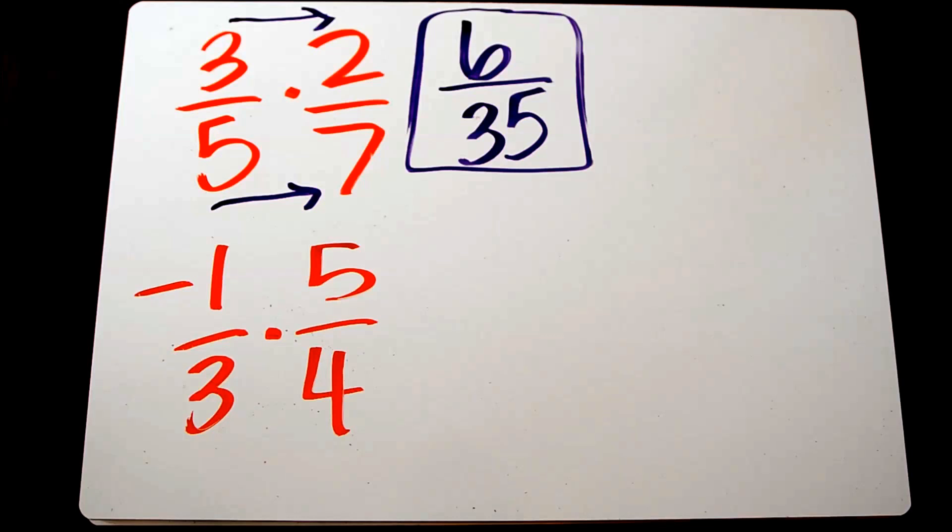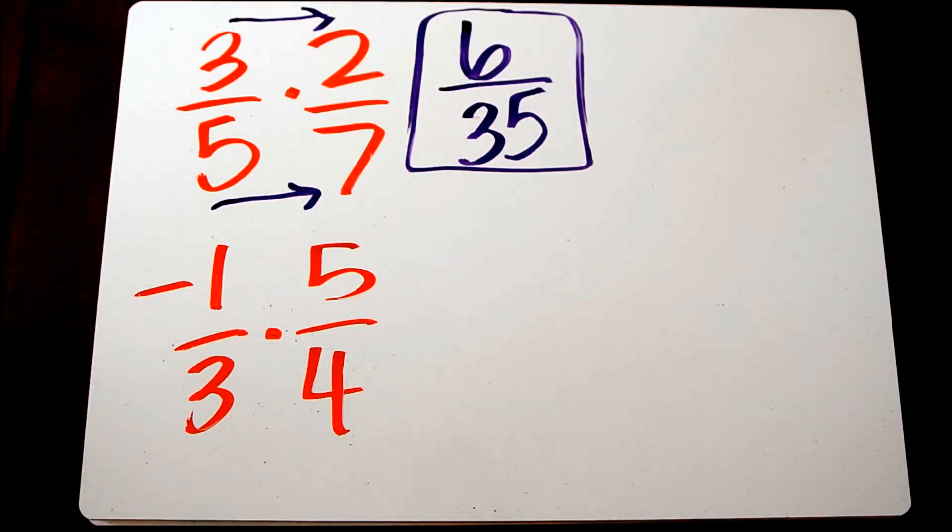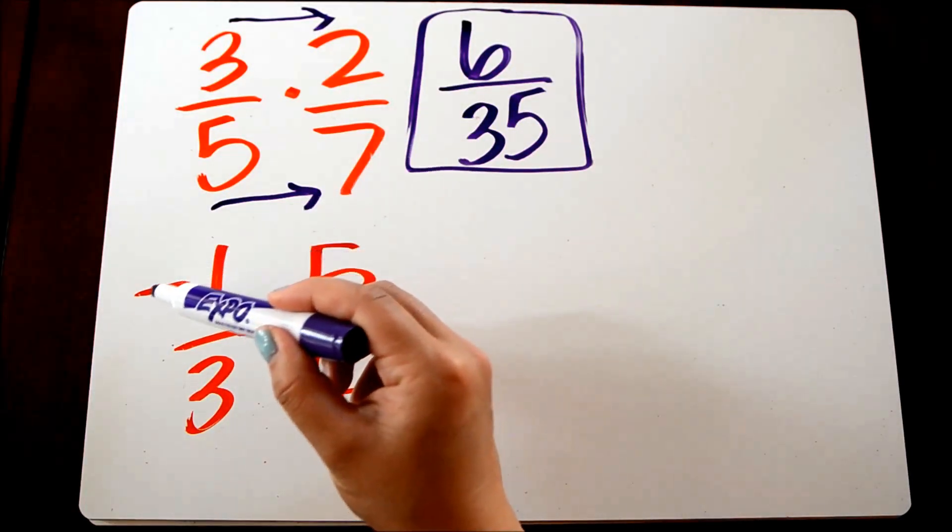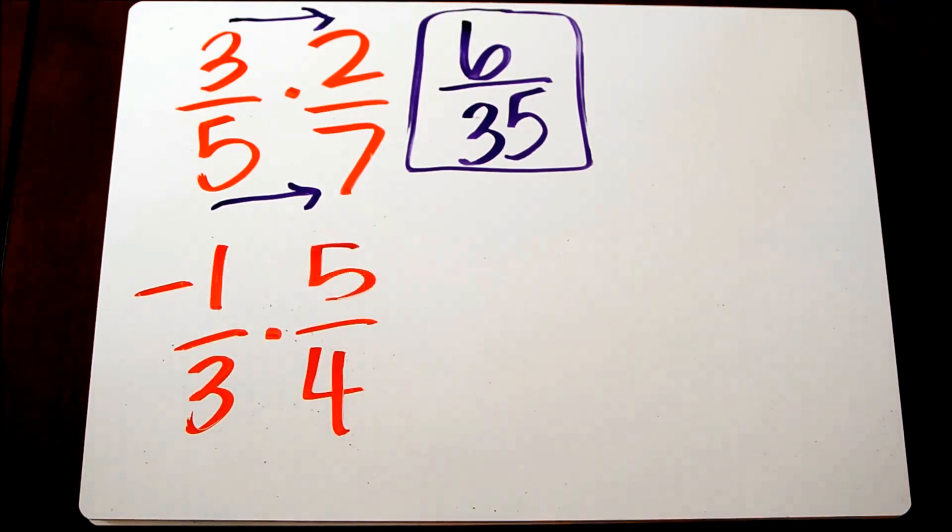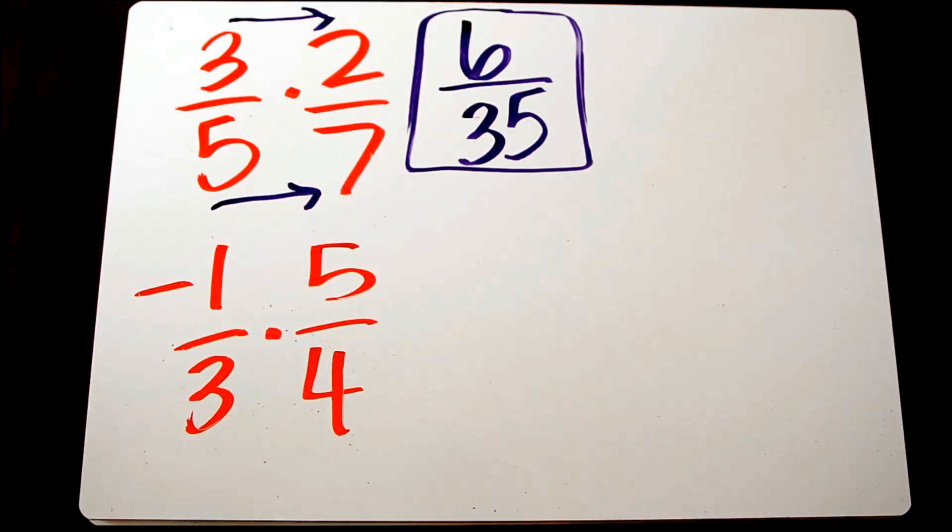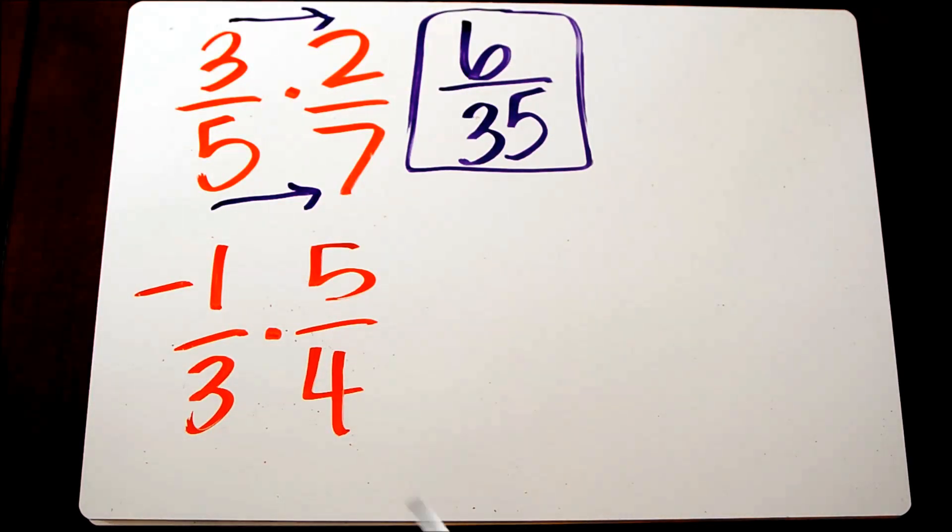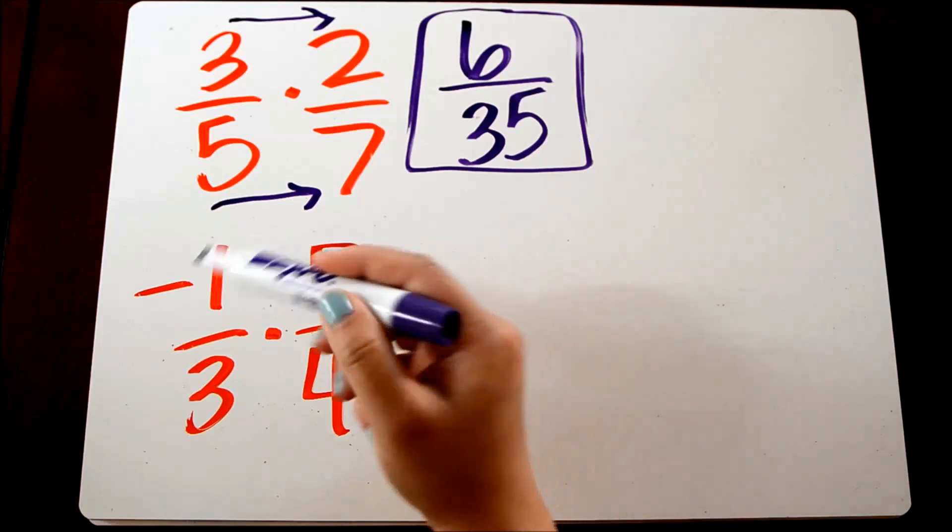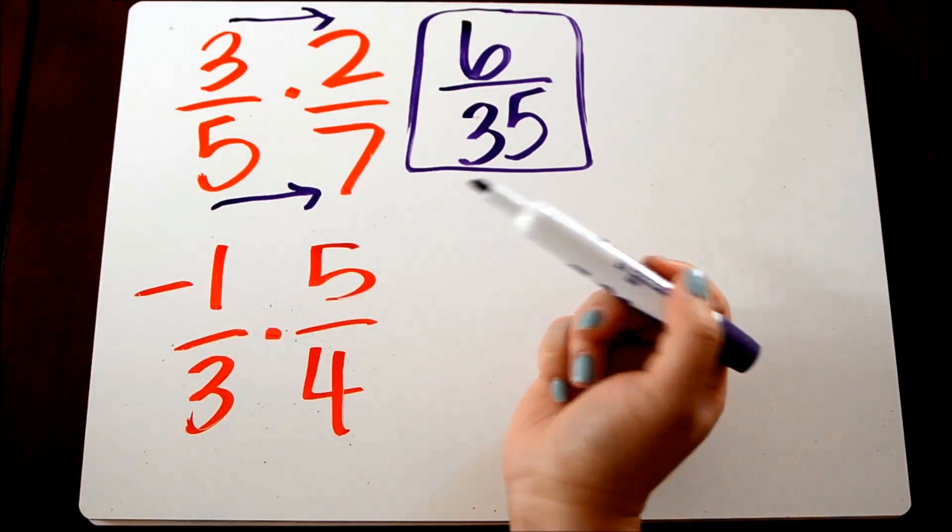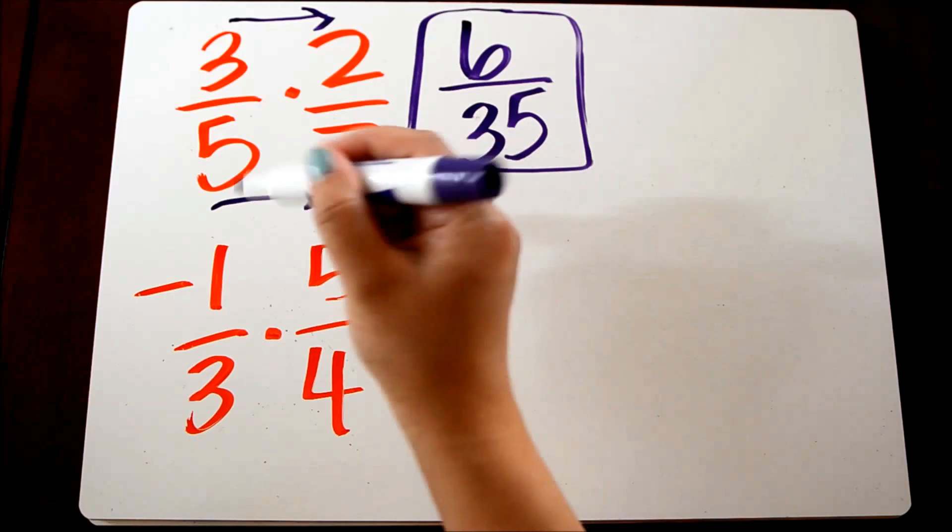The negative fraction confuses a lot of students because they think the negative symbol goes with the numerator and the denominator at the same time. But it really can only go with one or the other because if it went with both the numerator and the denominator, a negative over a negative would make a positive fraction. And we know that this is not a positive fraction. So we're still going to multiply straight across.